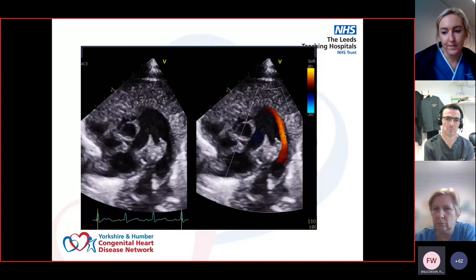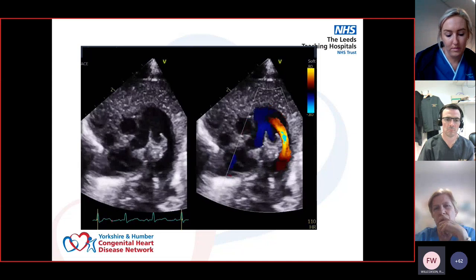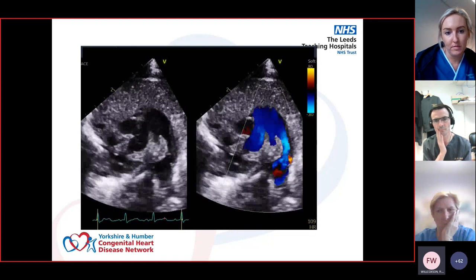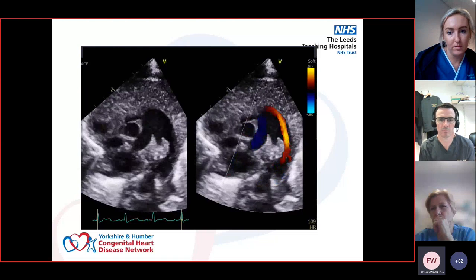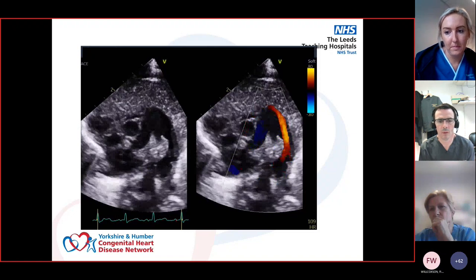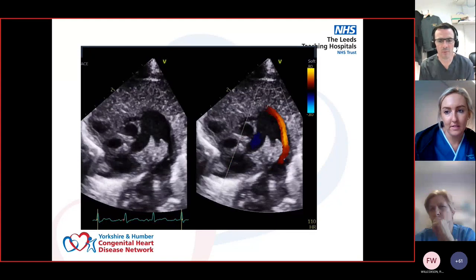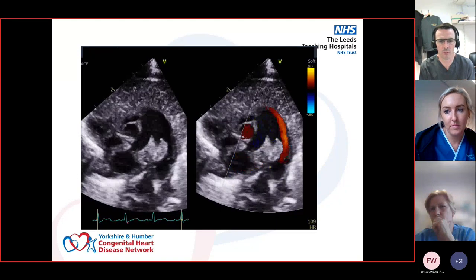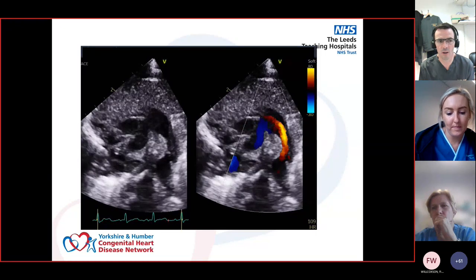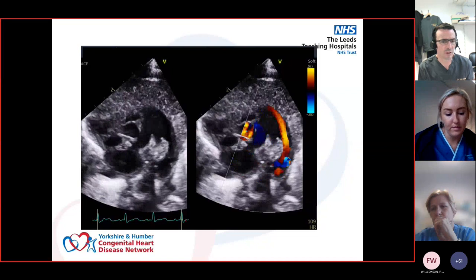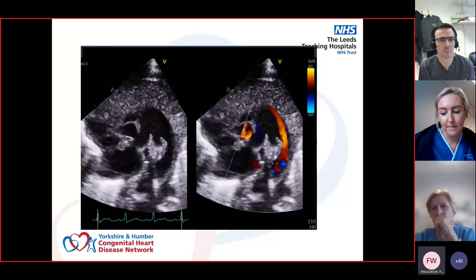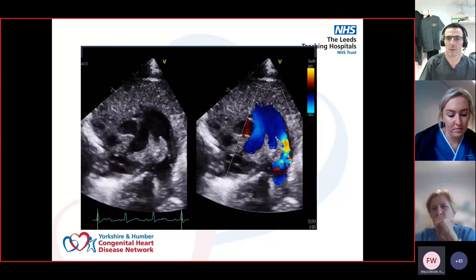If the baby is well with good femoral pulses, you won't operate at that stage - monitor in clinic. All babies with antenatal diagnosis of right heart dilatation are followed up until at least one year because late coarctation can develop. In the neonatal period, underfilled left hearts can look small and it can be difficult to distinguish early PPHN from arch pathology - the clinical picture changes and must be reassessed.